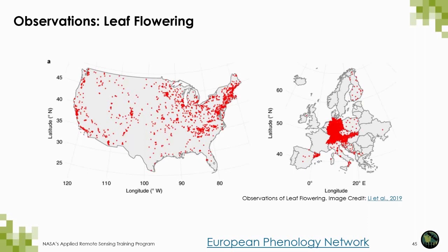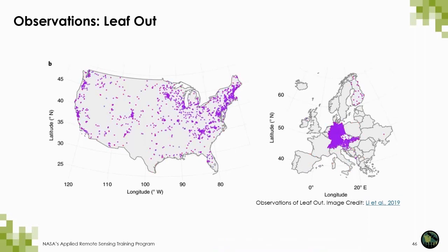In order to acquire over 22 million observations from across the US and Europe, the team used three continental-level monitoring programs: the NPN, NEON, which are two we've discussed previously, as well as the US and European Plant Phenology Network. This figure shows the locations of data points for leaf flowering. I've also included a link to the European Phenology Network for more in-depth information. This figure shows the locations of leaf out measurements. These were essentially the two metrics — leaf flowering and leaf out — analyzed in this paper.